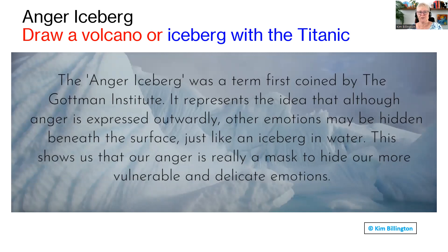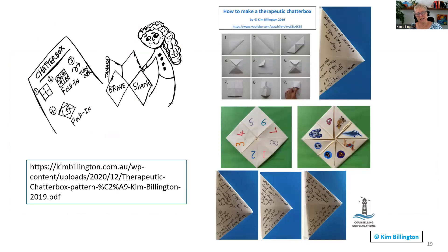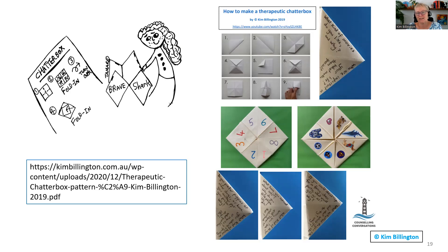The anger iceberg was originated by the Gottman Institute, though I don't use the iceberg. On my website you'll find a free resource about making a chatterbox. The questions in a normal chatterbox are things like 'what's your favourite colour,' but in a therapeutic chatterbox we ask therapeutic questions. Narrative therapy is full of questions that really open up conversations — we ask the word 'why' after we've asked the first question. For example: 'What kind of movies do you like and why?' The person will share their values and a bit more about their story.